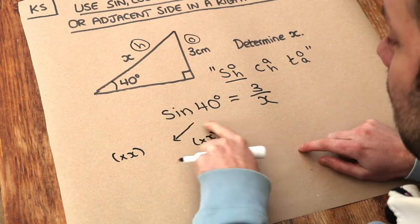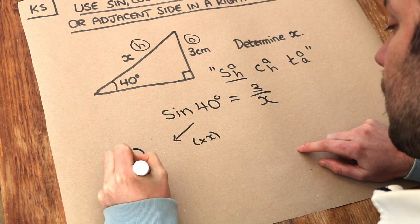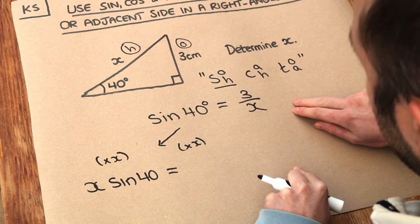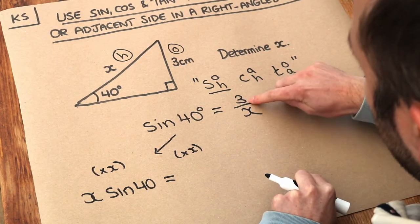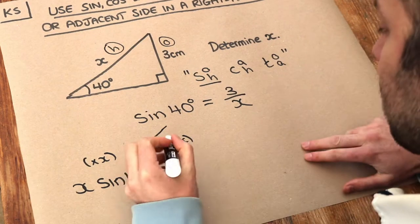And if we do that, the left-hand side of this equation becomes x times sine of 40, and the right-hand side just becomes 3, because if you've got 3 divided by x, and you times by x, the times x cancels out the divide by x, so we just get 3.